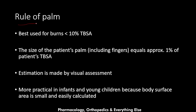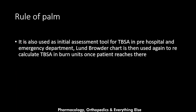The other method is the rule of palm. It is best used for burns that are less than 10 percent total body surface area. The size of the patient's palm including the fingers equals approximately one percent of the patient's total body surface area. Estimation is made by visual assessment only. It is more practical in infants and young children because the body surface area is small and easily calculated, and it is also used as an initial assessment tool pre-hospital and in emergency departments. The Lund and Browder chart is then used to recalculate in burn units.